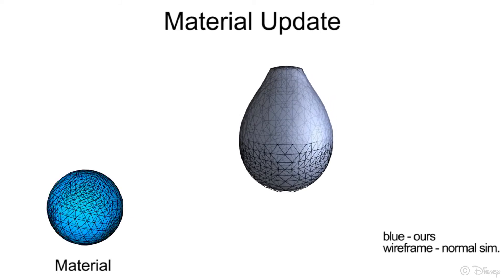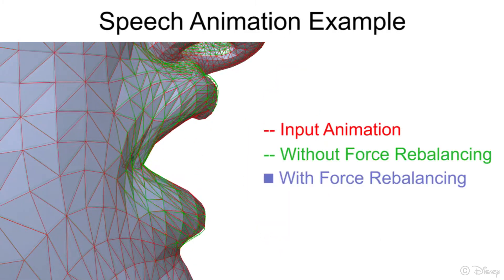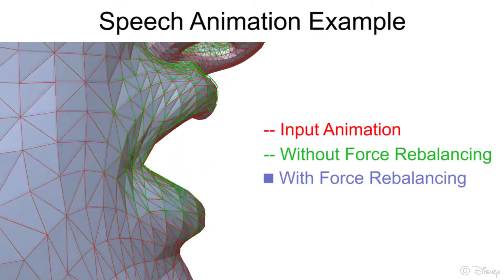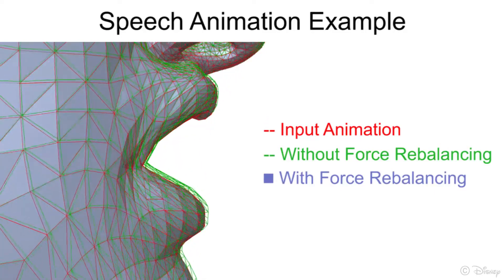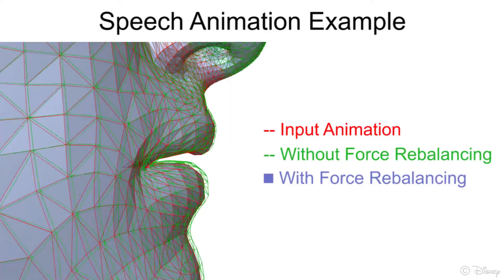Preventing spurious forces like these is particularly important for speech animation, where the visual and audio signals must be synchronized. In this example, the input animation, shown in red wireframe, defines the per-frame rest shapes and there is no additional head motion. Our result, shown in blue, perfectly matches the input since there are no forces acting on the face. Without force rebalancing, spurious forces caused by the rest shape changes produce unwanted motions, as shown in green wireframe. This is particularly noticeable if the motion stops abruptly.